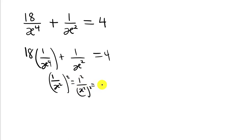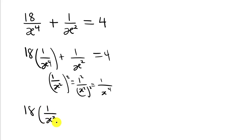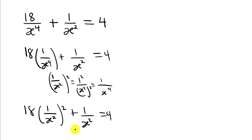That gives us 1 over x to the power 4. So in that case we are going to have 18 multiplying (1 over x squared) all squared, plus 1 over x squared, equal to 4. At this point we do a substitution of our choice — we let a variable represent 1 over x squared.